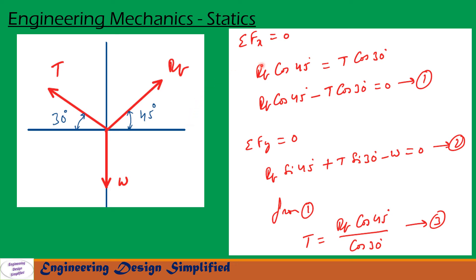Now let us resolve forces along the x-direction: sigma Fx equals 0, that is the sum of forces along the x-direction equals 0. Along x, the horizontal component of RB is RB cos 45, and the horizontal component of T is T cos 30. W has no horizontal component since it acts vertically downwards. So we get: RB cos 45 minus T cos 30 equals 0. Let us call this equation 1.